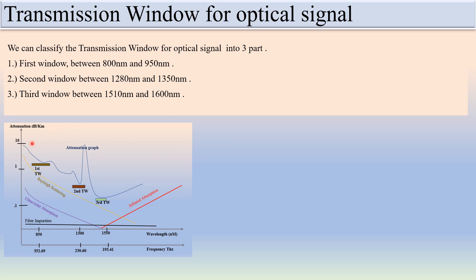We can see here this is the attenuation graph, showing ultraviolet absorption, Rayleigh scattering, and infrared absorption. This marks the first, second, and third window. The x-axis shows frequency in terahertz and wavelength in nanometers, while the y-axis shows attenuation. There are also fiber impurities indicated. We will discuss this in detail in the next slides.